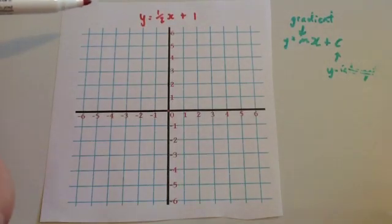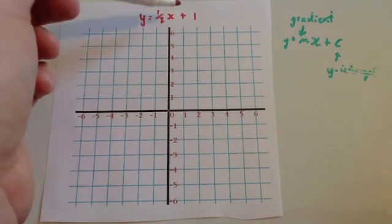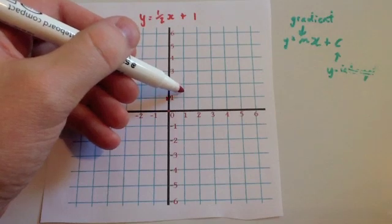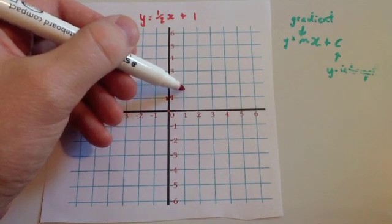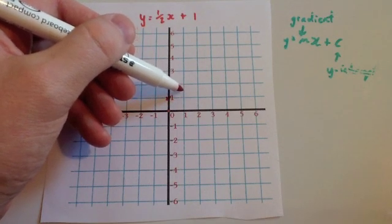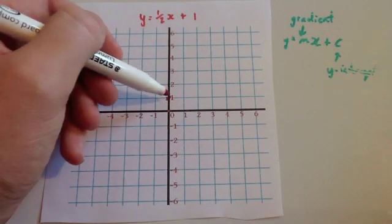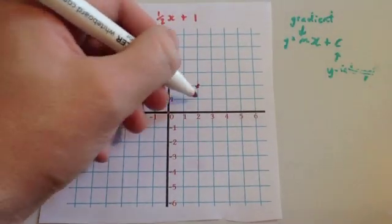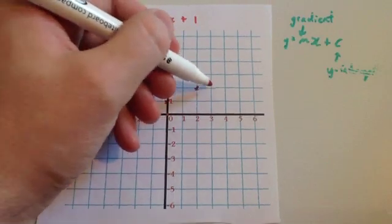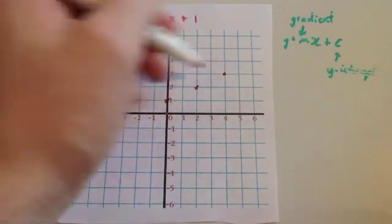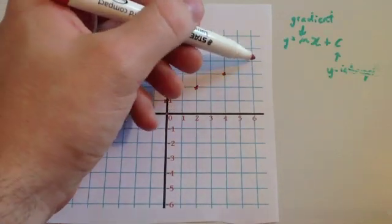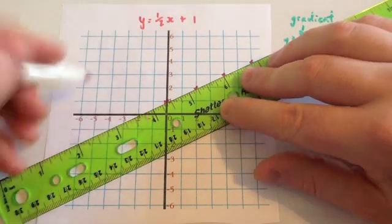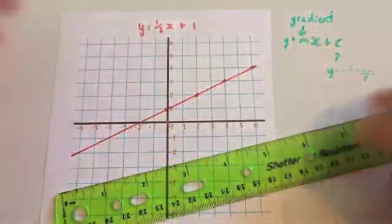Let's do one last example. This time we're going to draw the graph y equals a half x plus 1. The y-intercept is plus 1, so put the y-intercept there. The gradient is a half, which means as you go across 1, you go up a half. I tend not to plot that half-square point because it's a bit of guesswork. Instead, going across 2 squares you go up 1 full unit. So across 1, up a half, across 1, up to 3, across 1, up to 3.5, across 1, up to 4, and so on. Then get your ruler, put it through the points, and draw a nice straight line through those points. And we've just drawn the graph y equals a half x plus 1.